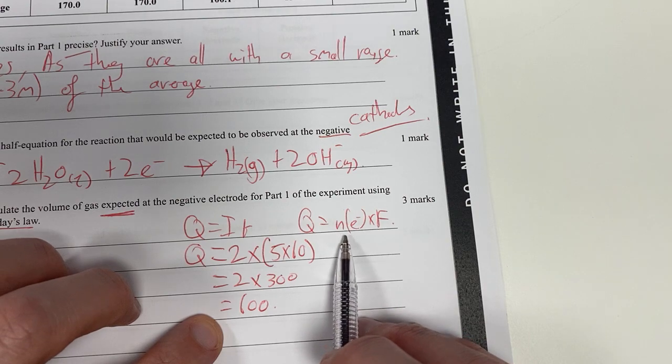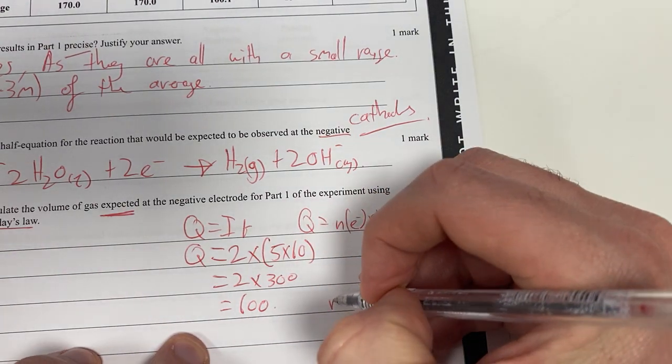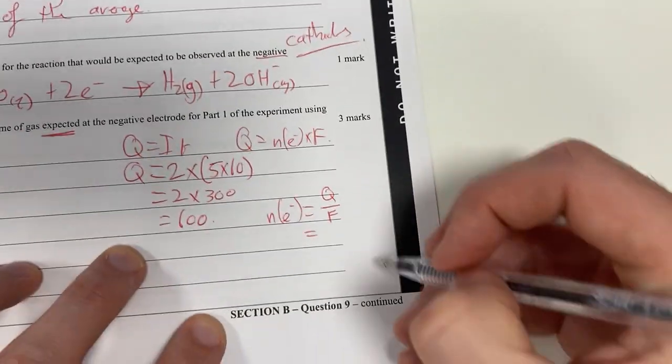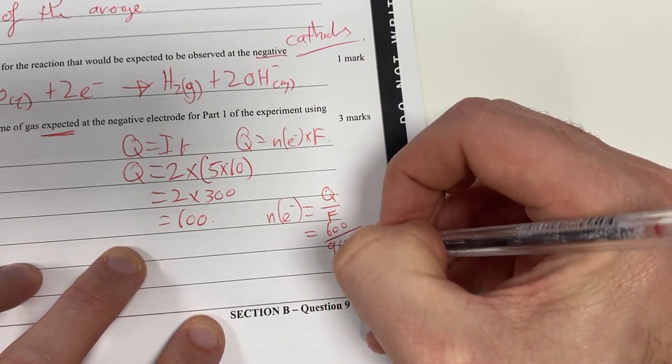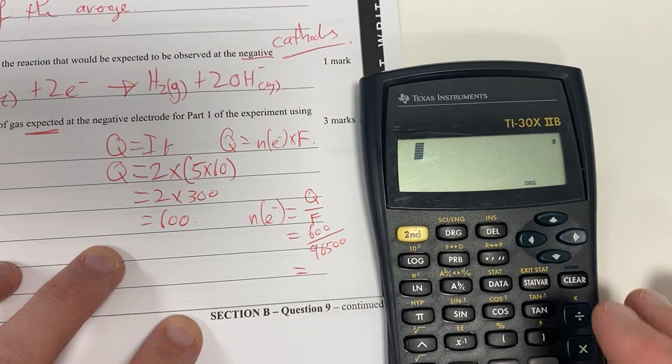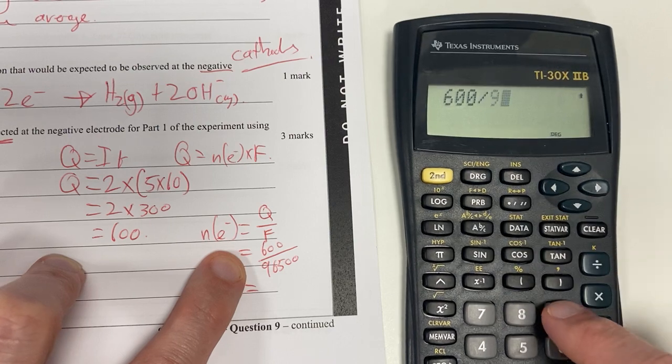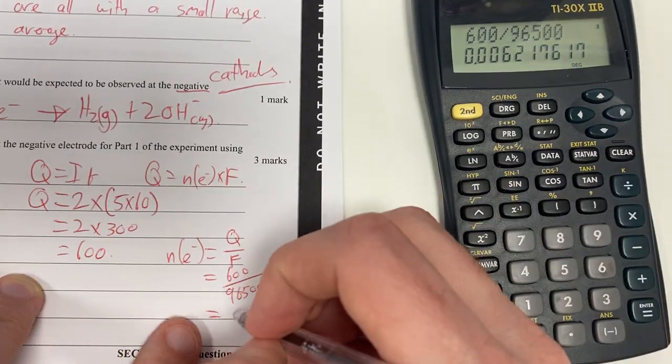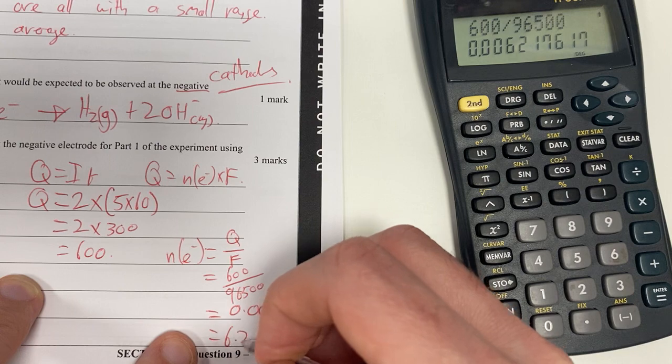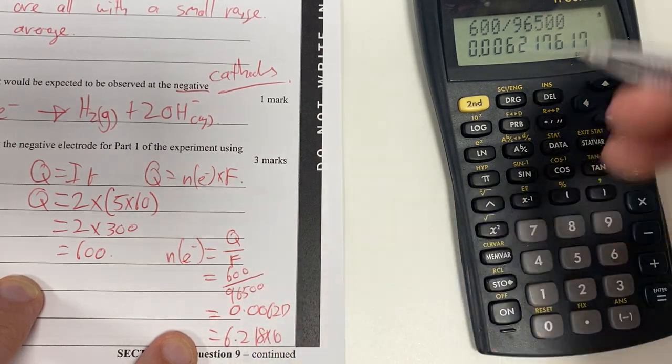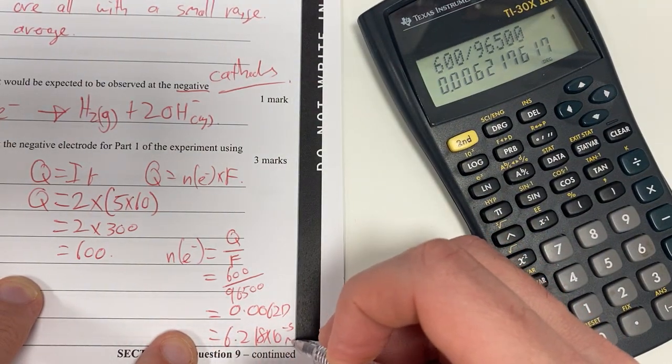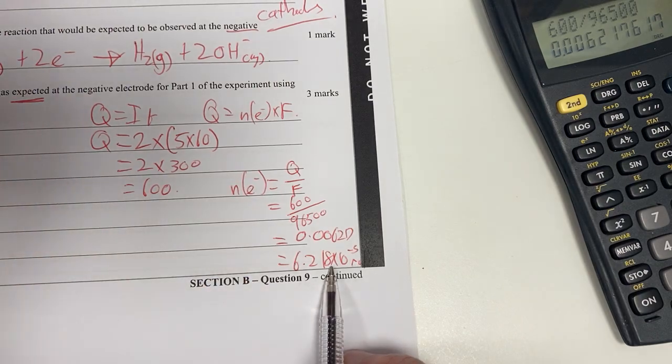Now my number of moles of electrons is what I'm going to find out next. Number of moles of electrons equals Q divided by F. So this is 600 divided by 96500, which is my Faraday's constant. So I'm going to take 600 divided by 96500 gives me 0.00621 equals 6.218 times 10 to the negative 3 moles.